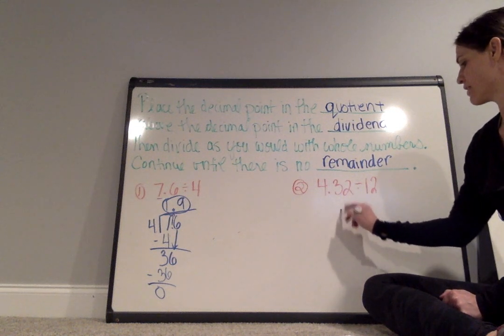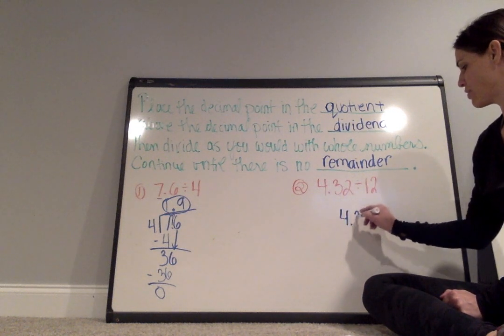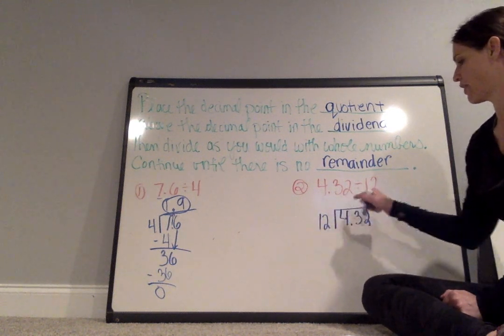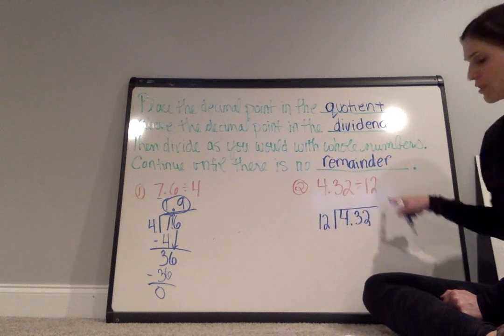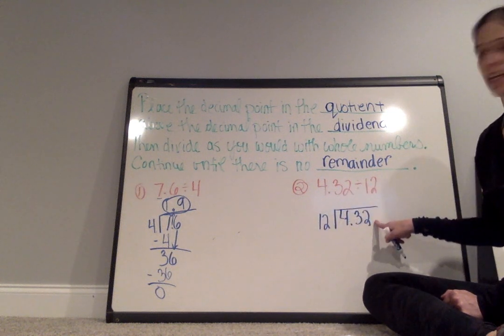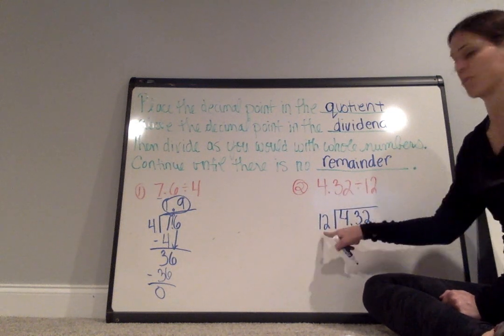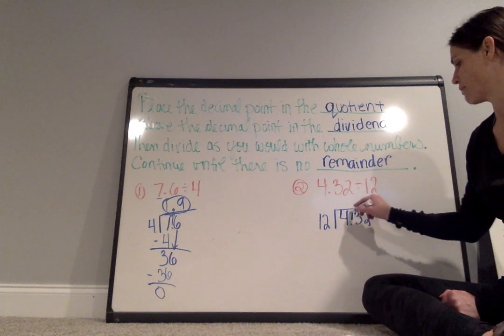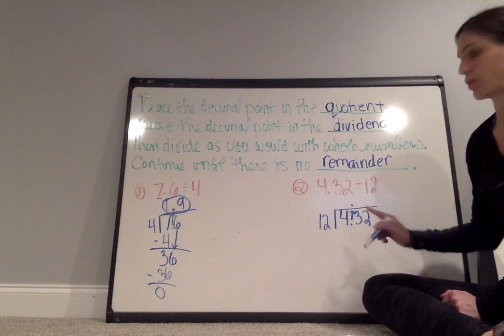So I will place 4.32 in my dividend divided by 12. Again, what is listed first goes underneath in the dividend and I'm dividing it by the number that becomes the divisor. I'm going to move the decimal point up to my quotient and then divide as I normally would.